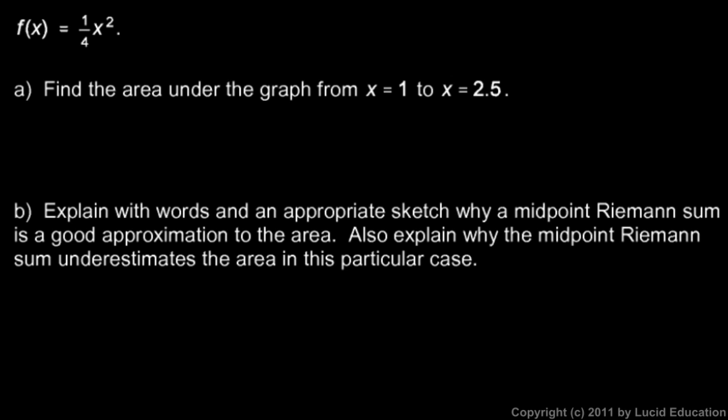In this problem we're told that f(x) is 1/4 x², and there are two parts here, a and b. Part a, we're told, find the area under the graph from x = 1 to x = 2.5.